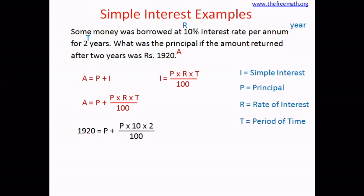This is like a single variable equation problem. On the right-hand side numerator, P multiplied by 10 multiplied by 2 equals 20P. So what we get is P plus 20P divided by 100 equals 1,920. I've swapped the sides to get the variable on the left-hand side — you can swap sides in an equation without changing its value.